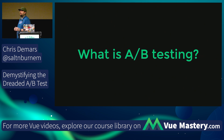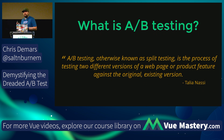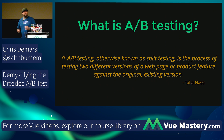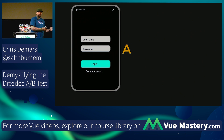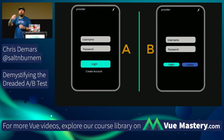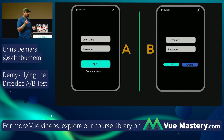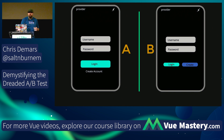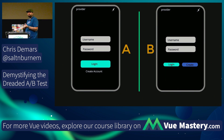So what is A/B testing? Has everybody heard the term before? From Talia Nasi: A/B testing, otherwise known as split testing, is the process of testing two different versions of a webpage or product feature against the original existing version. You have version A — two inputs for username and password, a button, maybe a link to create an account — that's what 100% of your users see. Version B is just a small change in the UI, a CSS change, moving something around. That's your A/B test.